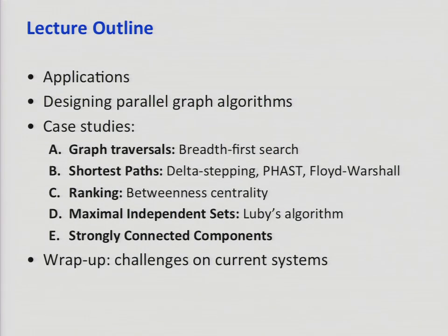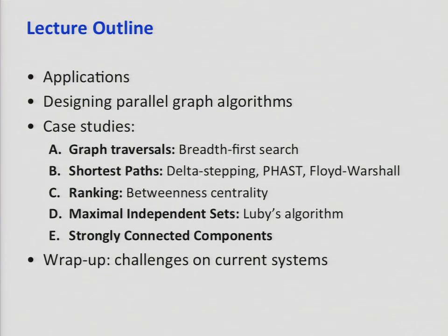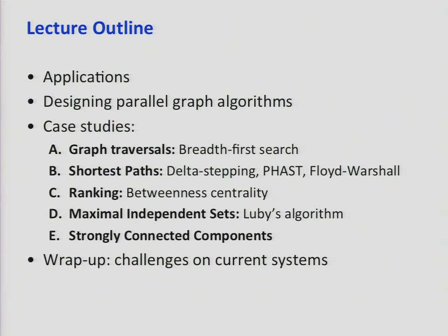This is the outline. I'll start with applications for motivation, then speak about the general kinds of things you should worry about when designing parallel graph algorithms, and I have a lot of case studies. Graph traversal forms the basis of pretty much every other graph algorithm. Shortest paths has many applications. Ranking entities on a graph is used in data mining. The last two emphasize parallel algorithm design paradigms: randomization, and strongly connected components emphasizing recursion and divide and conquer.